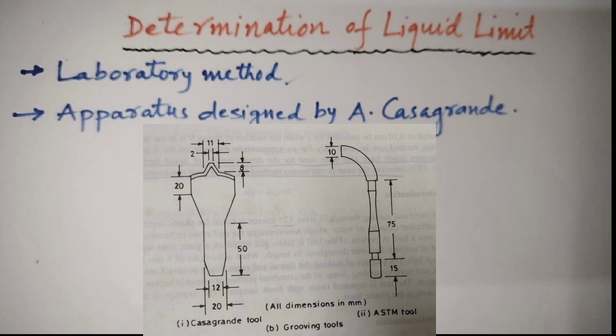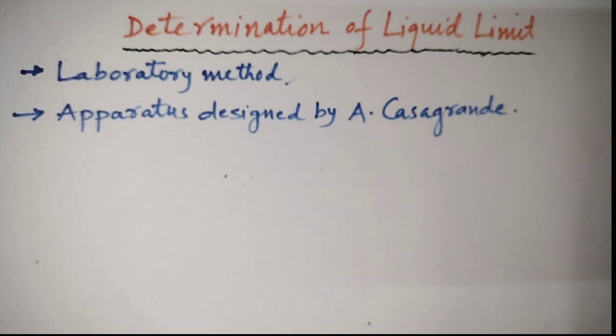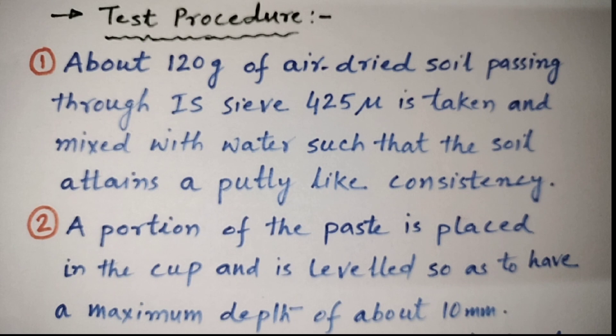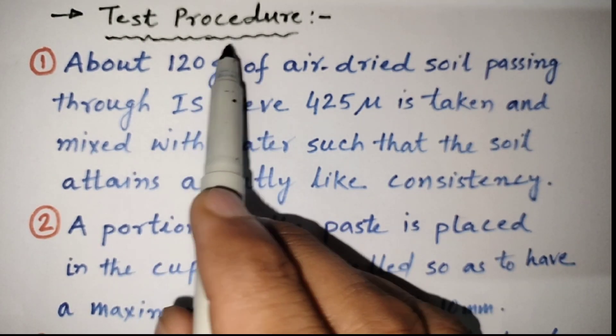A grooving tool is used to cut a groove in the path of soil placed in the cup. Two types of grooving tools are in use. These are Casagrande tool which cuts a groove of 2 mm width at the bottom, 11 mm width at the top and 8 mm deep. Another groove is ASTM tool which cuts a groove of 2 mm width at the bottom, 13.6 mm width at the top and 10 mm deep. The selection of the grooving tool depends upon the type of the soil. For a soil of low plasticity, the ASTM grooving tool is preferred.